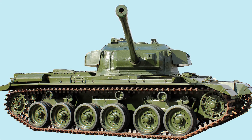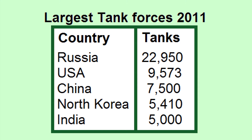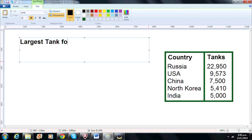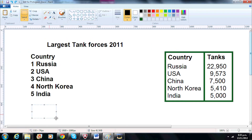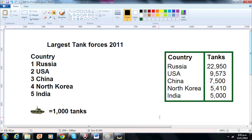For example, I will draw a pictogram to compare the countries that have the most tanks. First I need a table of statistical data showing the countries with the most tanks. I will give it an appropriate title and use an appropriate symbol to represent the tanks. Each tank picture in the graph will represent 1,000 tanks.